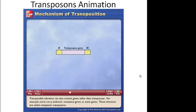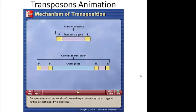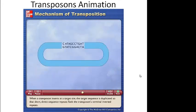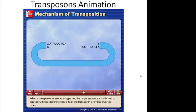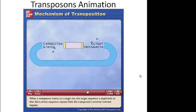Transposable elements can also contain genes other than transposase. For example, some carry antibiotic resistance genes or toxin genes. These elements are called composite transposons. Composite transposons consist of a central region containing the extra genes flanked on both sides by IS elements. When a transposon inserts at a target site, the target sequence is duplicated so that short direct sequence repeats flank the transposon's terminal inverted repeats.